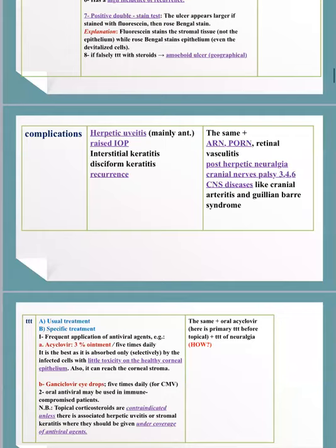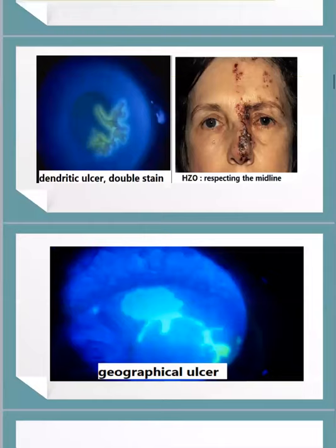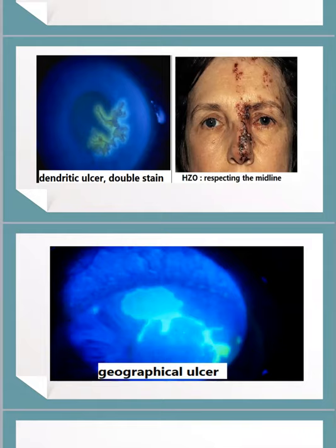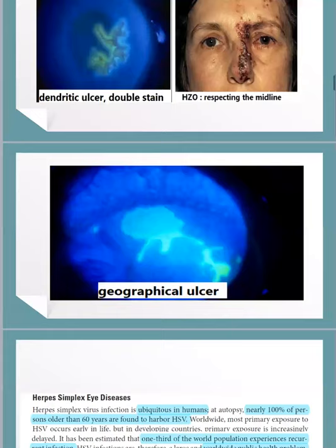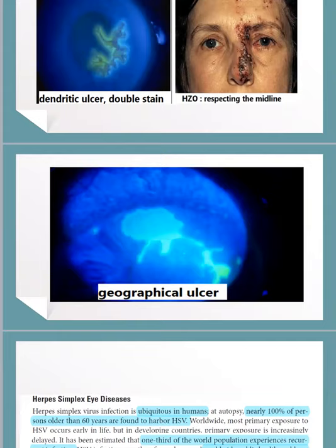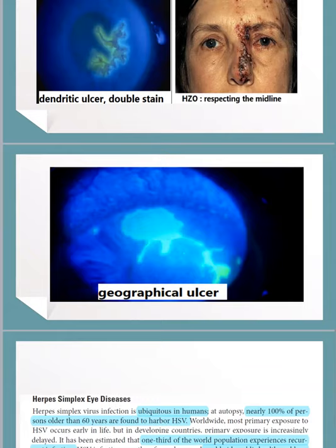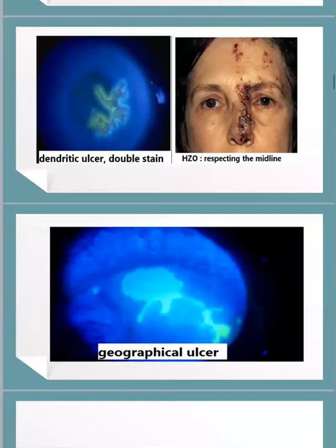In herpes zoster ophthalmicus or shingles, the vesicles respect the midline, which is characteristic. If this patient is falsely treated or misdiagnosed and given steroids, it may cause an amoeboid or geographical ulcer — a result of decreased immunity or the use of corticosteroids.